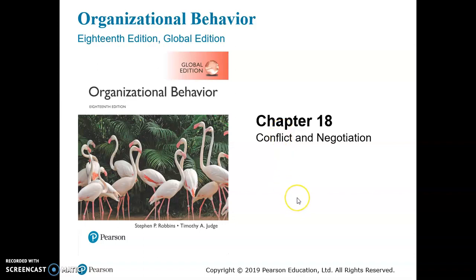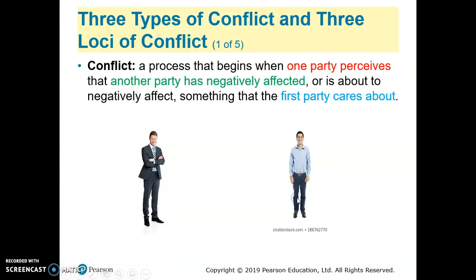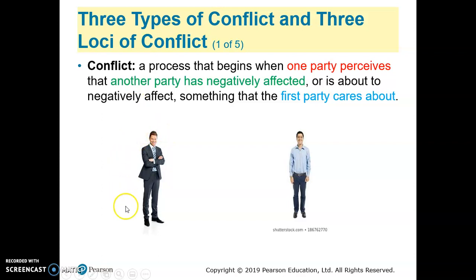Chapter 18 is about conflict and negotiations. We will start with the definition first. Conflict is defined as a process that begins with one party perceiving that another party has negatively affected or is about to negatively affect something that the first party cares about.